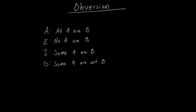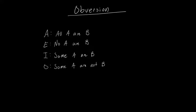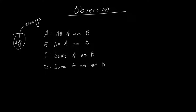Let's move on to the trickier obversion. To get the obverse of a statement, you're going to have to remember your complements. As a quick refresher, the complement of a category is just all of the stuff that falls outside of that category. First, let me show you the obverse of 'all A are B'. There are two things you need to do. Remember, A-type statements are universal affirmative statements.